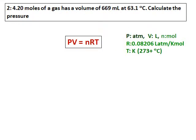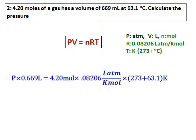4.20 moles of a gas has a volume of 669 milliliter at 63.1 degrees celsius. Calculate the pressure. A simple question, everything is given except that the volume is given in milliliter. We have to convert that into liters, substitute all the values and calculate the value of pressure. Remember to change the temperature to kelvin and use the value of R as 0.08206.